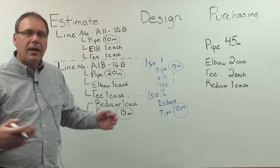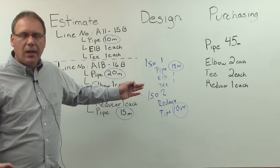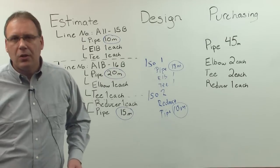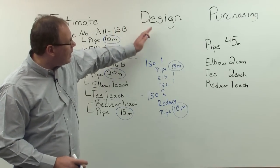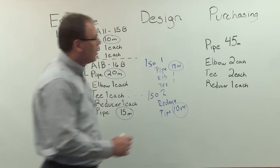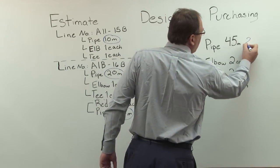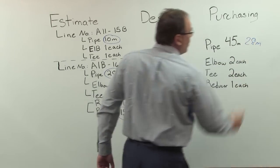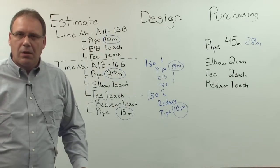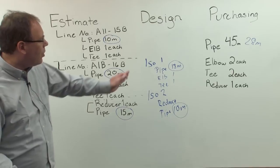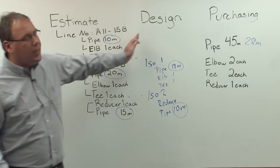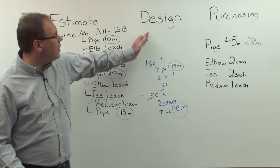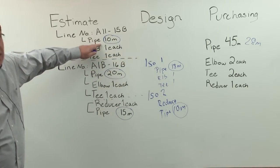If I would now start the normal purchasing process and say, give me all the quantities to purchase, now in a design, I will get 28 meters, and it would say 28 meters. But this is wrong. Because, what we forgot is, there is still a line number that is not designed yet, and virtually, we still need here 10 meters.